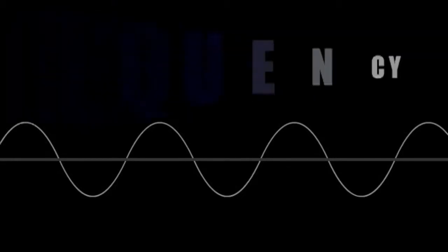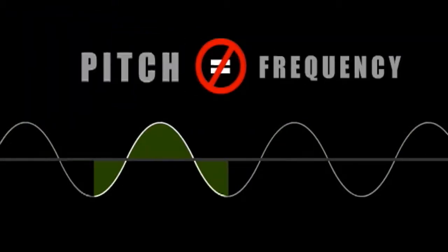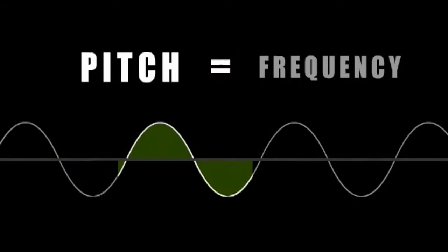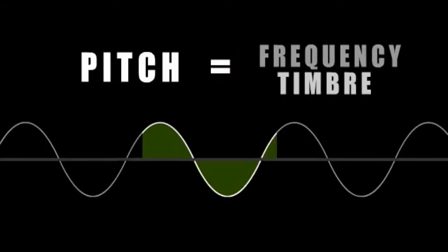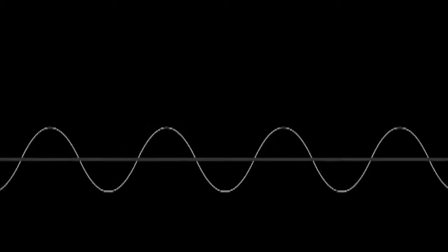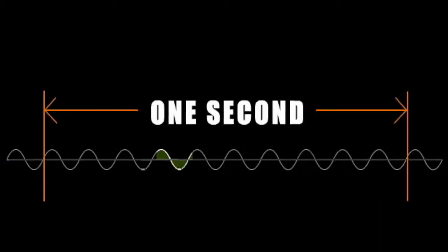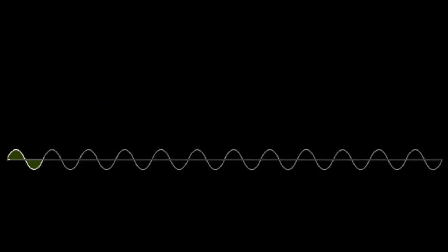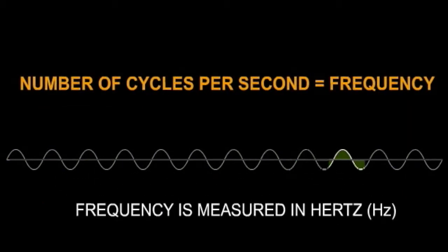The common term used to describe frequency is pitch. Pitch refers to frequency and timbre of a given sound. Frequency is how often a sound pressure wave repeats itself per second. We use the term cycles per second, or hertz, to define frequency.